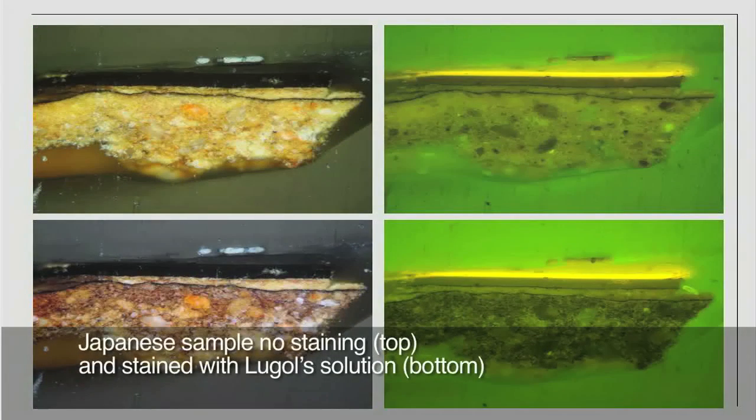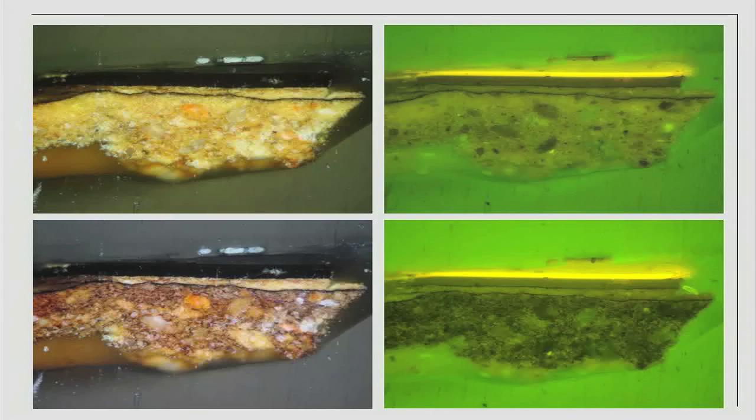In Japanese lacquer coatings, starch is a typical ingredient for these lower foundation layers, where it was often added to the Asian lacquer and clay powder mixture for optimising its adhesion properties.